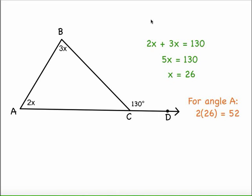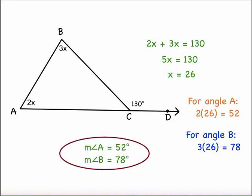For angle A, we're going to plug 26 in for X, and 2 times 26 is 52. For angle B, we're going to plug 26 in for X again, 3 times 26 is 78. So in conclusion, the measure of angle B is 52 degrees. The measure of angle A is 52 degrees. The measure of angle B is 78 degrees.